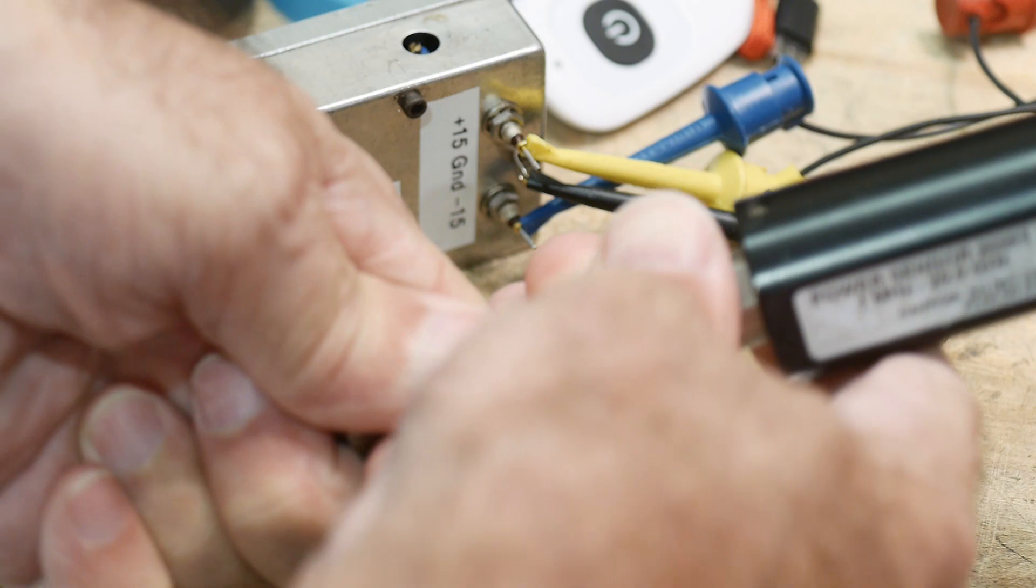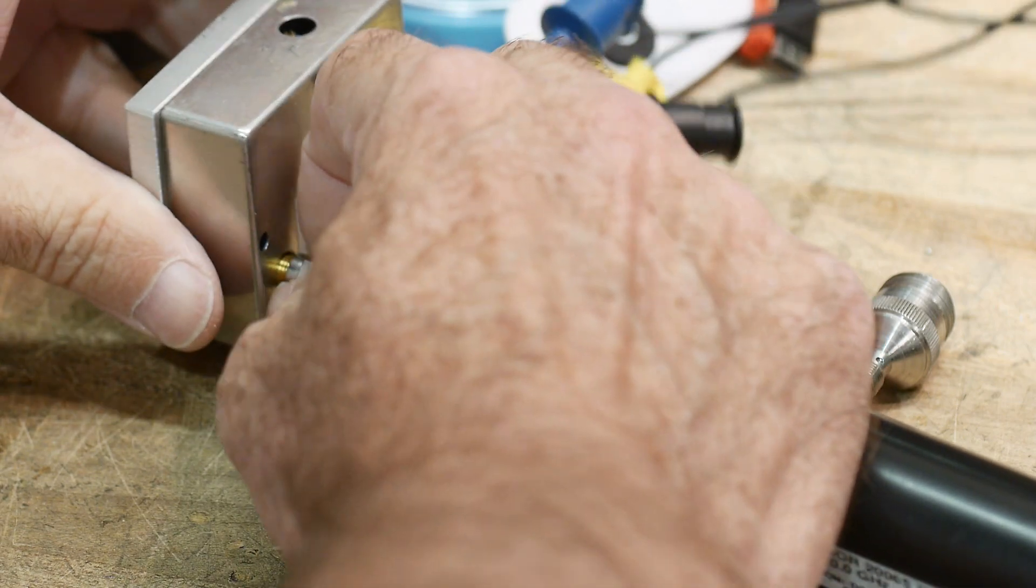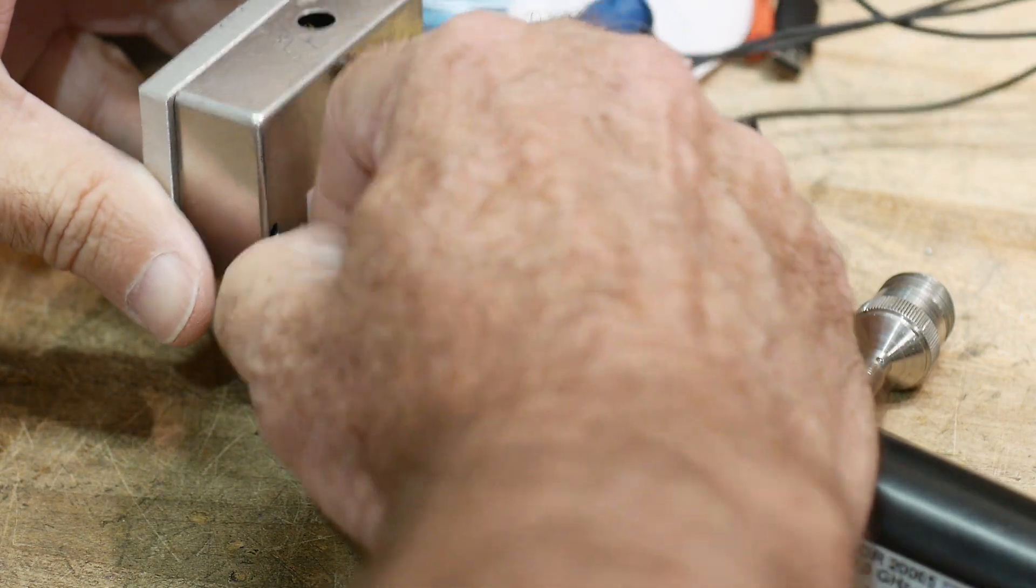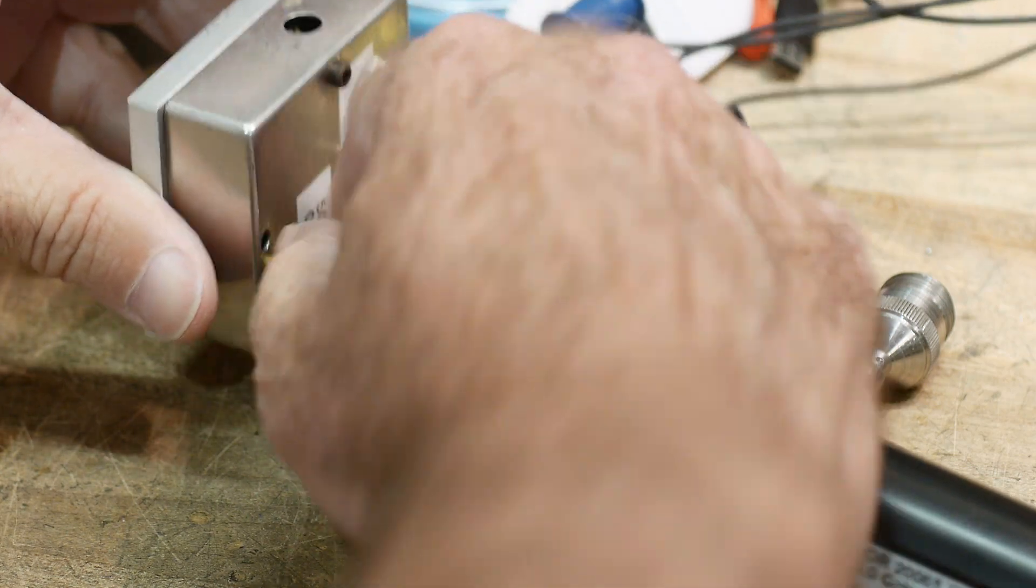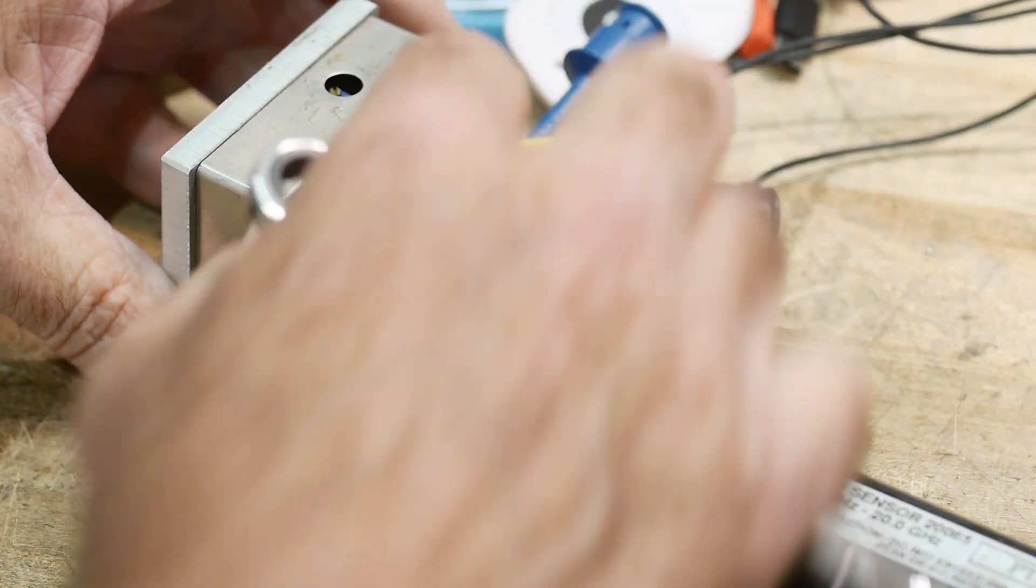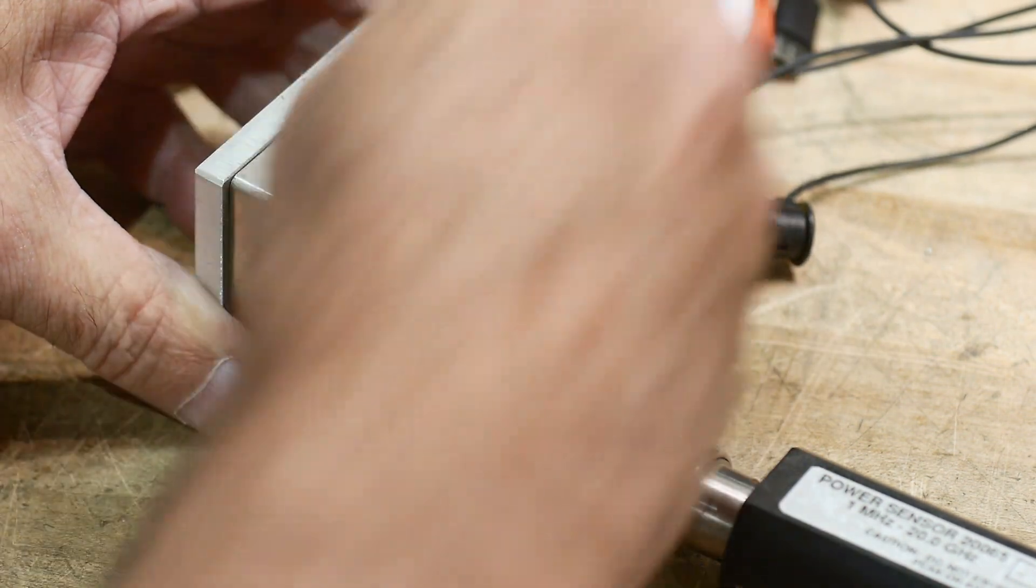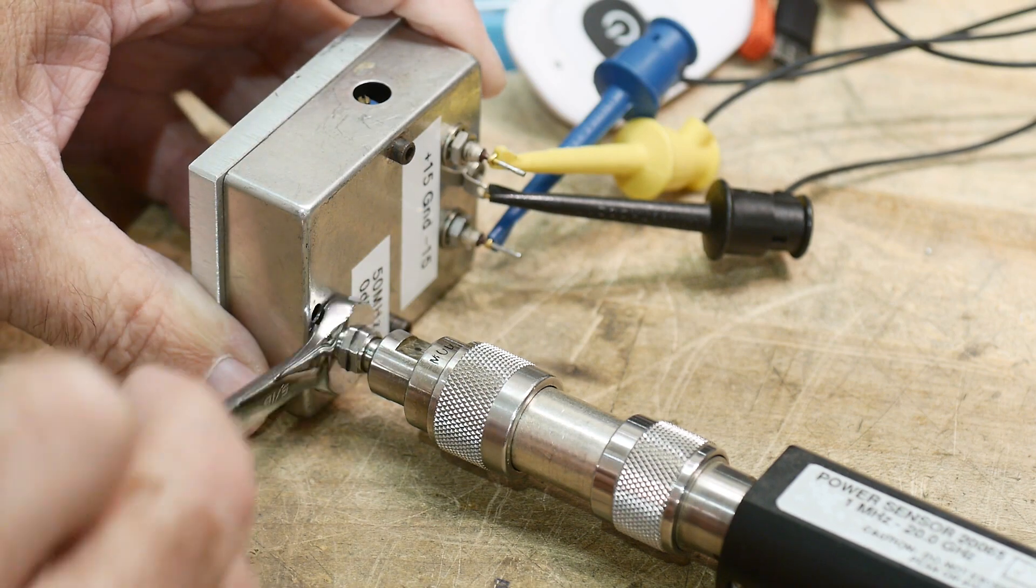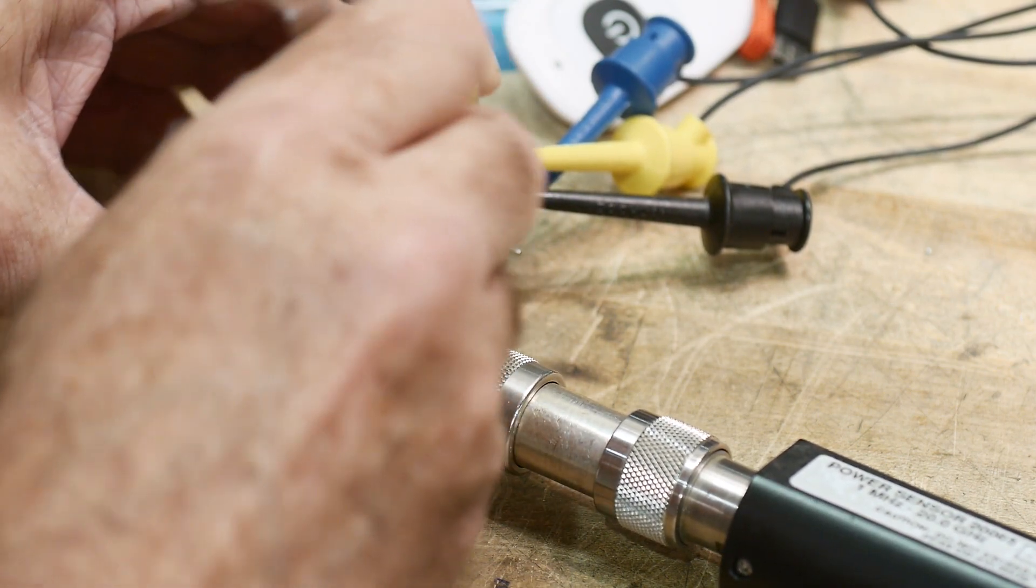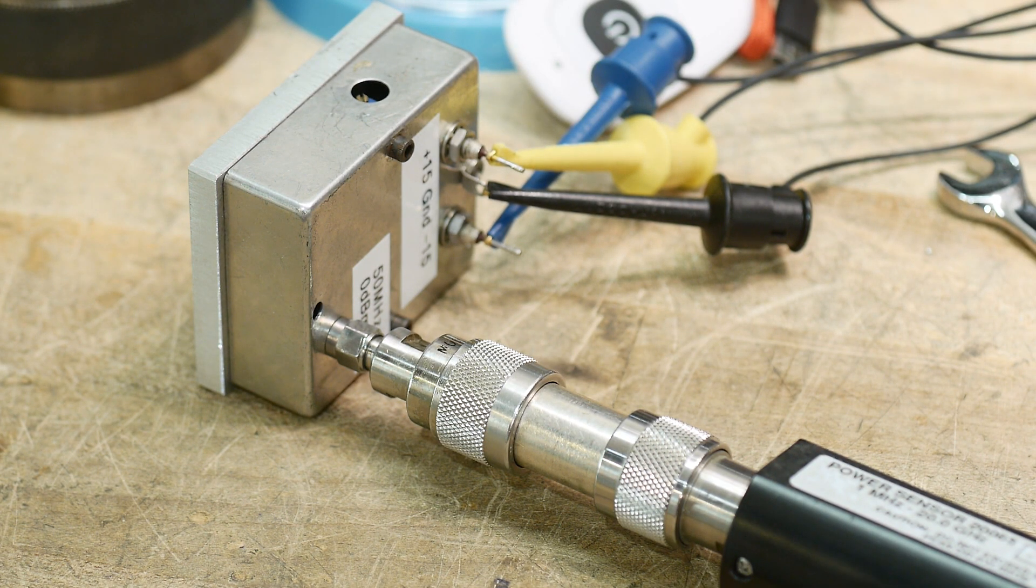I'm going to attach the power sensor. Now the problem with all of this is you've got all of this mass. Luckily we're measuring a very small thing, but a lot of times you're measuring big things and you have to really worry about torquing off little connectors and ruining things. Especially 3.5 millimeter connectors which are super expensive. But luckily this is really light. We are going to connect this up. It's about tight. Now we're going to go back to the power meter.